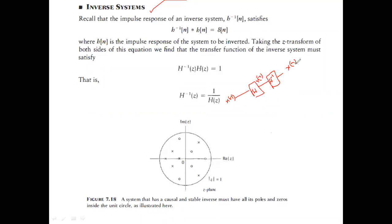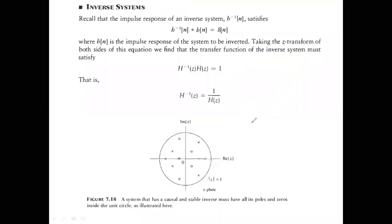The rule for finding the inverse system: the inverse system H⁻¹(n) must satisfy H(n) * H⁻¹(n) = δ(n). Taking the Z-transform, convolution becomes multiplication, so H(z) · H⁻¹(z) = 1, meaning H⁻¹(z) = 1/H(z). So the transfer function of the inverse system is simply one divided by H(z).